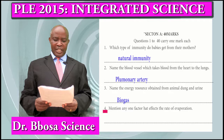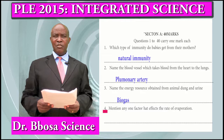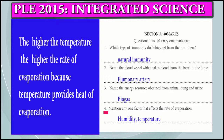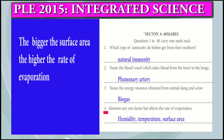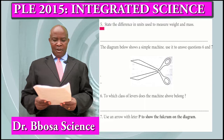Question 4: Name any one factor that affects the rate of evaporation. That is humidity. The higher the humidity, the lower the rate of evaporation, because there will be too much water in the air. Another factor is temperature — the higher the temperature, the higher the rate of evaporation, because temperature provides heat of evaporation. The third factor is surface area — the bigger the surface area, the higher the rate of evaporation. Another factor is wind — when there is wind, the rate of evaporation is high because wind blows away the humid environment around the stomata.